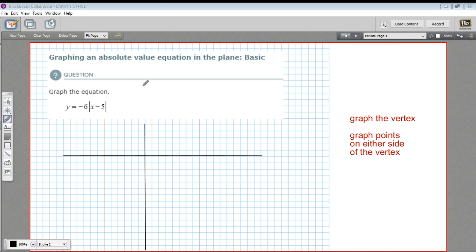Absolute value equations have this shape of a V when you graph them. It might be stretched or squished or turned upside down, but it's going to have some kind of V shape. And there's this point that the V comes to. We call that the vertex. When we graph an absolute value equation, we want to try to graph the vertex first. So that's our first step.